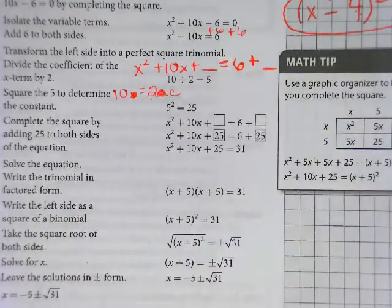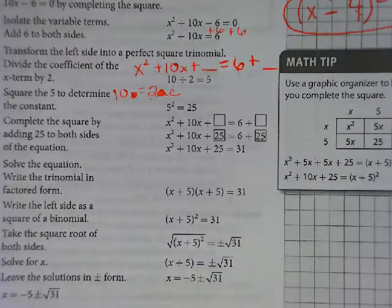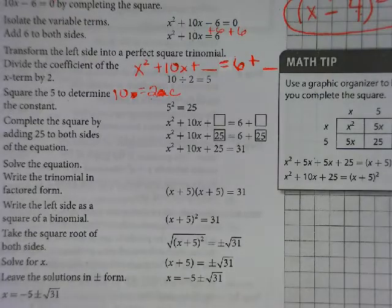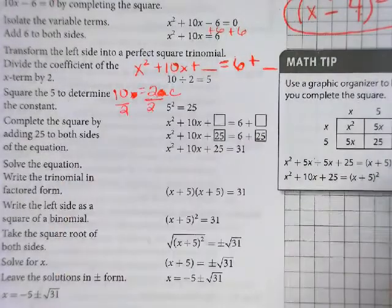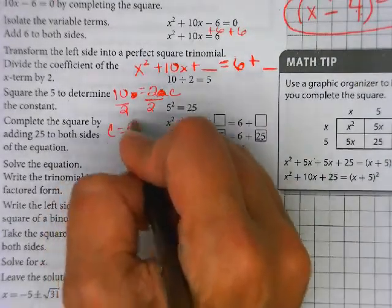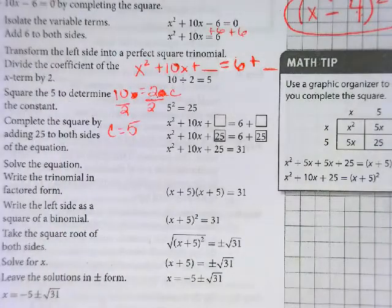How are we going to solve that? How do we find C if two times C equals 10? What do we need to do? We're going to divide by two and we get C equals five. Are you with me there?